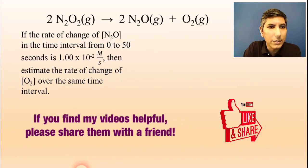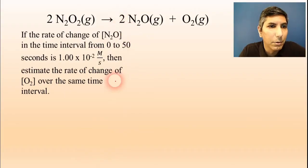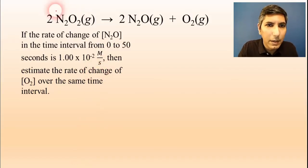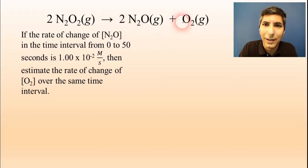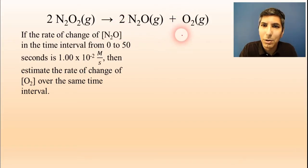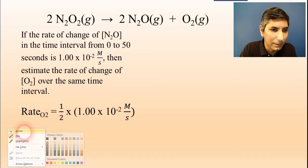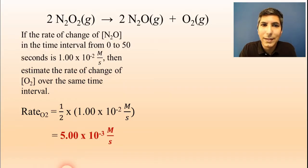We calculated that the rate of change of N₂O in the time interval from 0 to 50 seconds was 1.00 × 10⁻² molarity per second. So let's estimate the rate of change of oxygen over the same time interval. The mole ratio of N₂O to oxygen is 2 to 1, so whatever the rate of reaction of N₂O is, oxygen is going to be half of that because its coefficient is half that of N₂O. Half of 1.00 × 10⁻² M/s gives 5.00 × 10⁻³ molarity per second.